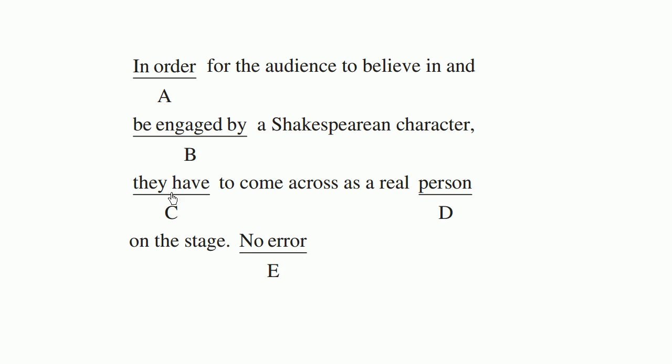So even when I read that, when they said they have to come across as a real person on the stage, the way that the sentence was constructed, it looks like they're referring to the audience. In order for the audience to do this thing, they, the audience, has to come across as a real person on the stage.